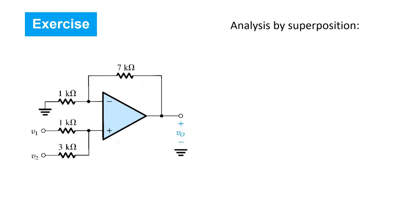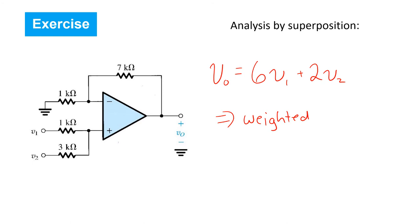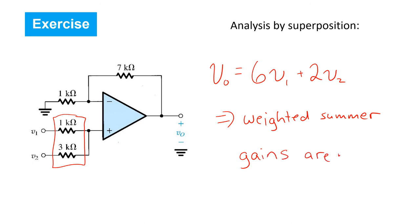The last step in the superposition analysis is to combine the results from the previous two steps. So we write that Vo equals 6 times V1, found in step 2, plus 2 times V2, found in step 1. So you see it's a weighted summer — a weighted summation of the two input voltages, where the relative weighting is determined by the component values. Unlike the weighted summer with the inverting configuration, here the gains are positive.